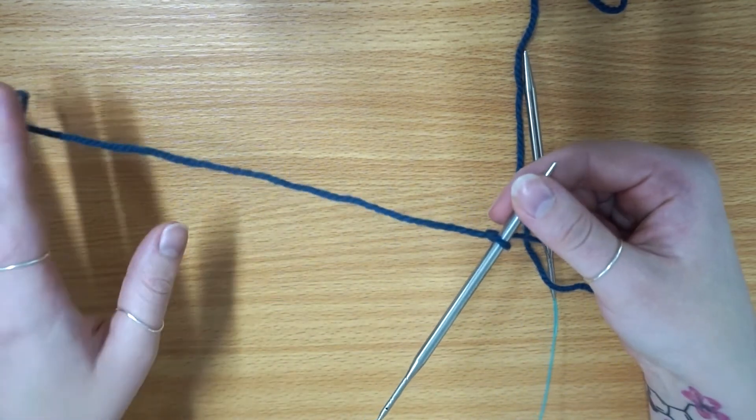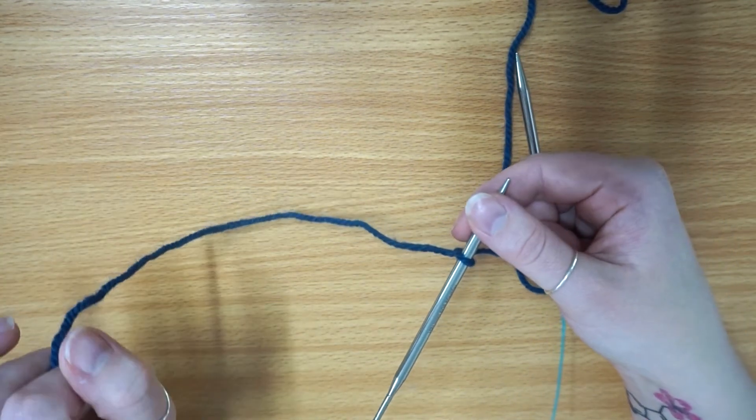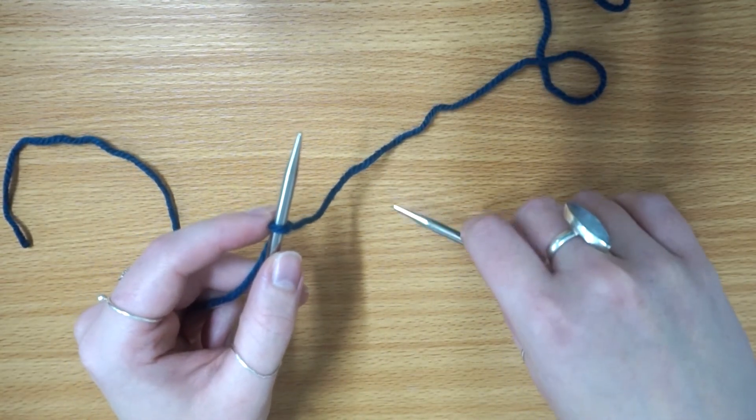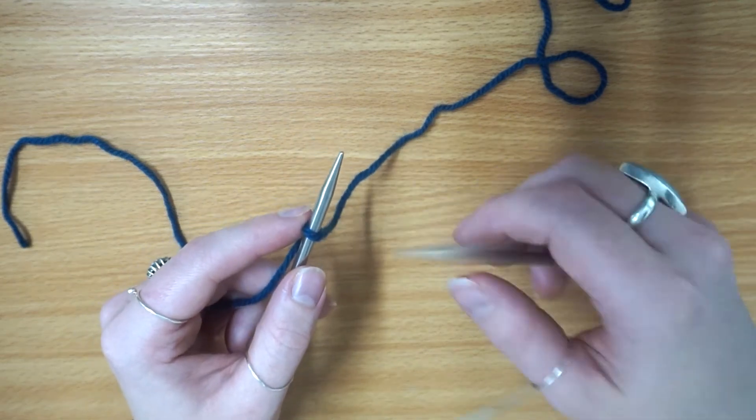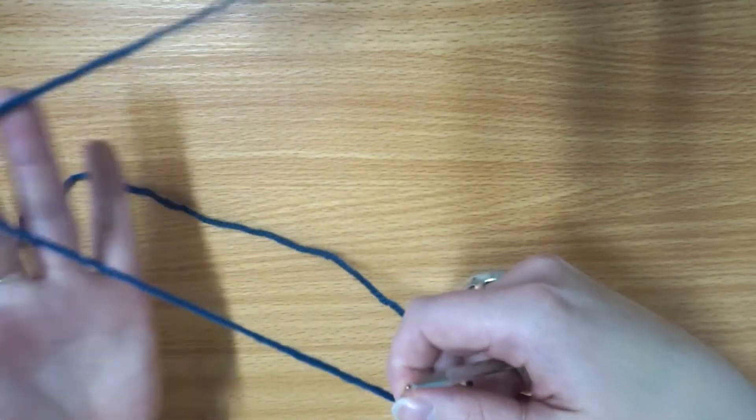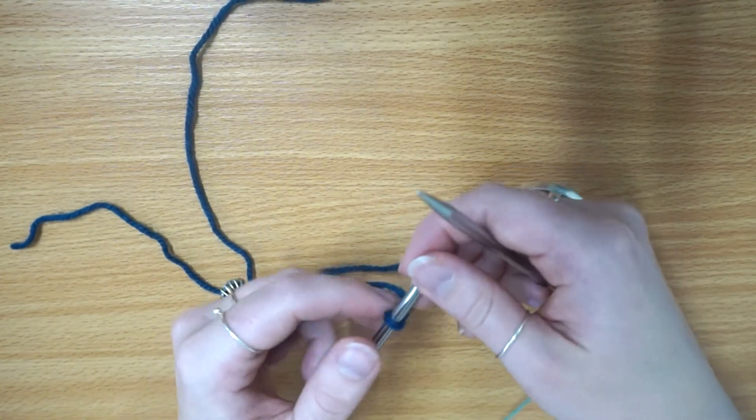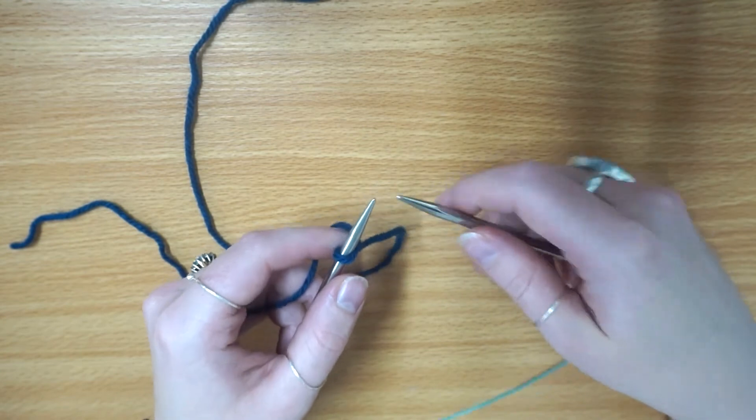As a warning, I am a combination knitter which means I do a mix of eastern and western continental knitting. This may look a little bit different - essentially it means I hold my yarn in my left hand rather than my right hand and I knit through the back loop rather than the front loop. If that doesn't mean anything to you, don't worry.